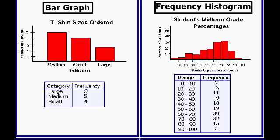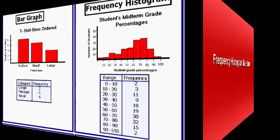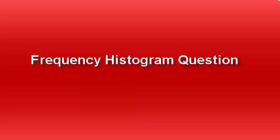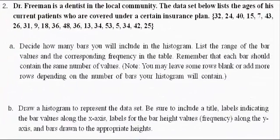Okay, so now that we've reviewed the difference between a bar graph and a frequency histogram, we can go on and solve the histogram question that was sent in to us. So the question reads: Dr. Freeman is a dentist in the local community. The data set below lists the ages of his current patients who are covered under a certain insurance plan. And there we have a list of ages.